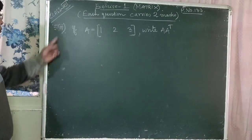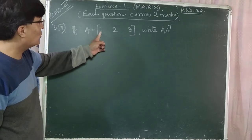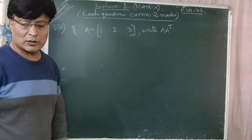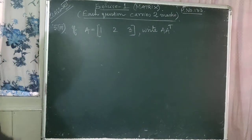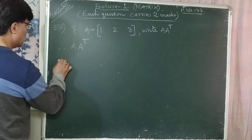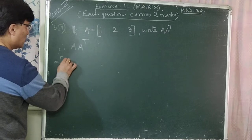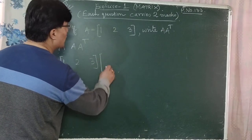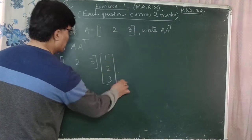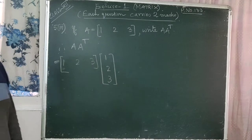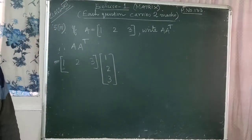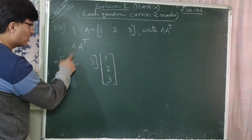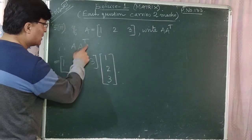Question number three of number five. If A is equal to [1, 2, 3] — only one row given, so this is the row matrix — you have to find A·A transpose. A is the row matrix [1,2,3]. A transpose is the column matrix [1; 2; 3]. Number of columns of A is 3, and number of rows of A transpose is 3, so they are equal and matrix multiplication is possible.